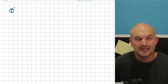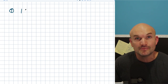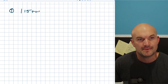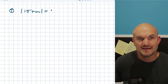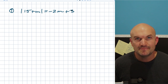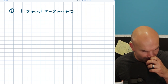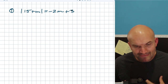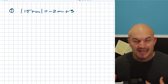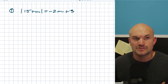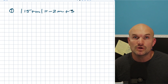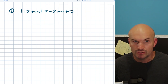It all stems with having a variable on both sides. So if I had the absolute value of 15 plus m equal to negative 2m plus 3 — when we have a variable on both sides, we have to be concerned with extraneous solutions. Extraneous solutions are basically just a solution that works for a simplified equation, but does not work for the original equation.